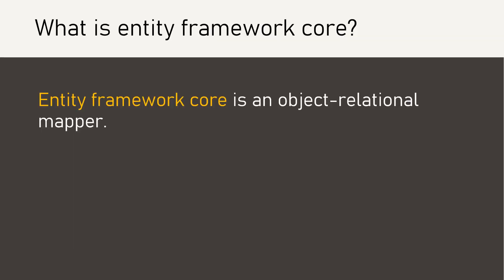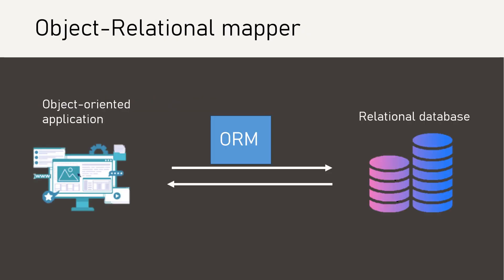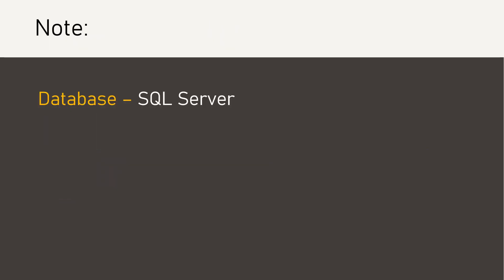Entity Framework Core is an Object Relational Mapper. An Object Relational Mapper is software that sits between your object-oriented application and a relational database. With this, you can use object-oriented language to talk to a relational database. Please note, I will use SQL Server as my database, but you can choose any relational database. It is already installed in my system.